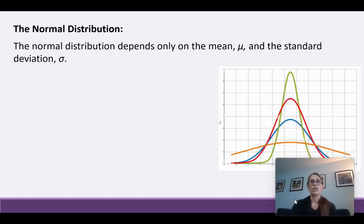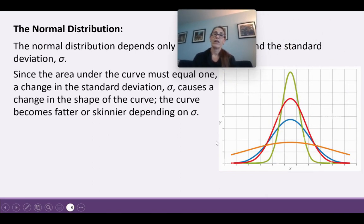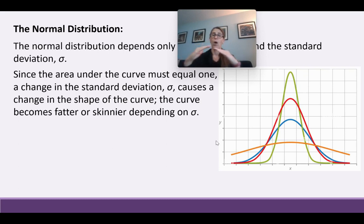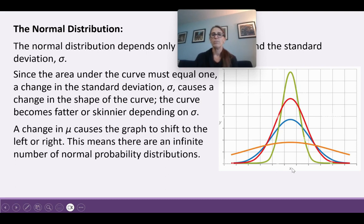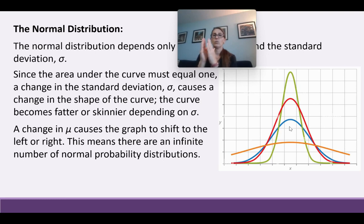The normal distribution depends only on mu and sigma. Since the area under the curve must equal 1, any change in sigma causes a change in the shape. A small standard deviation gives a narrower curve, and a bigger one gives a wider, flatter curve. A change in mu shifts the graph left or right. A smaller standard deviation gives a taller, narrower curve; a bigger one gives a shorter, wider curve.